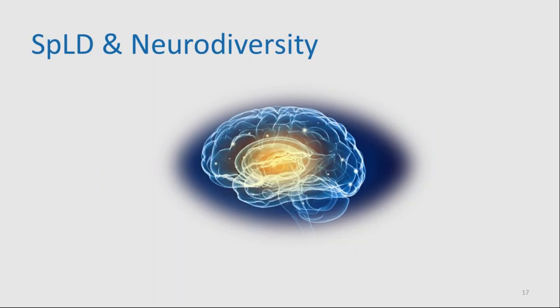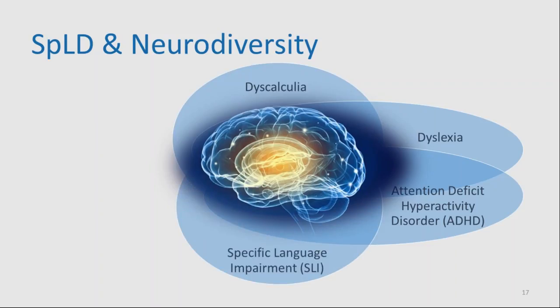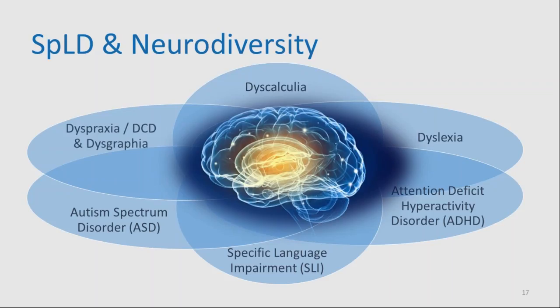The term neurodiversity encompasses all specific learning differences, many of which may co-occur and overlap, as this diagram shows. It's particularly important to notice that the various SPLDs overlap because a student is likely to have one or more co-occurring difficulties. In 2001, Gilger and Kaplan wrote: 'In developmental disorders, co-morbidity is the rule, not the exception.' You could also use the word co-occurrence. This means that if each student has a mix of characteristics from different learning differences, we can't assume anything about their needs, abilities, or the type of support that will work for them.